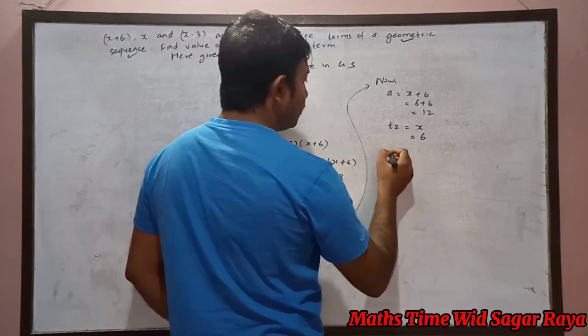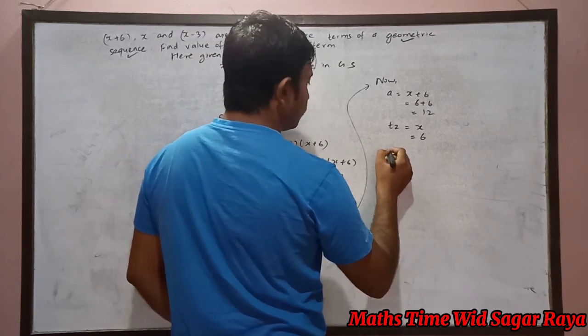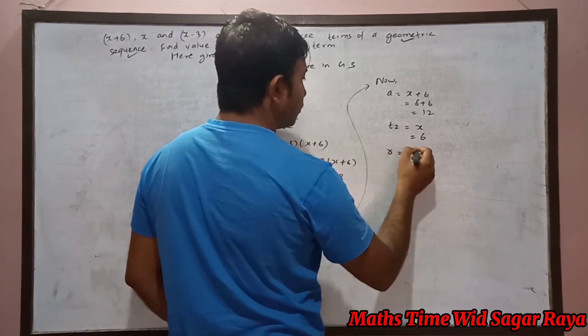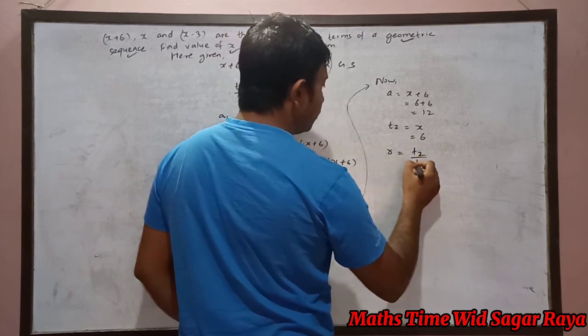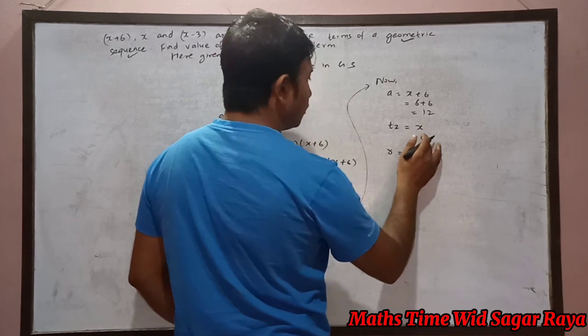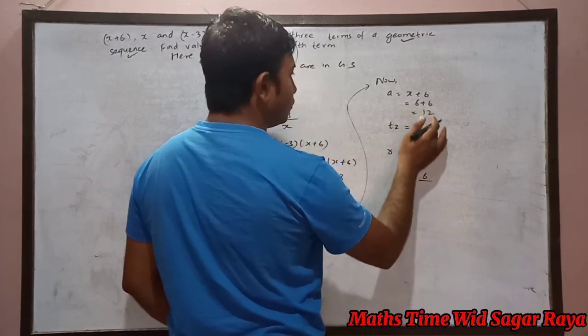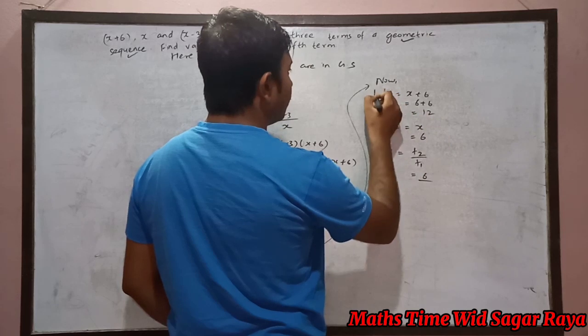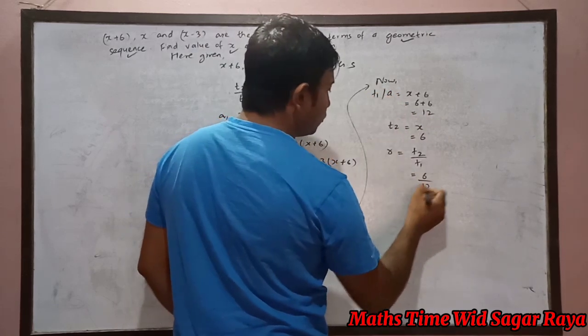Let's find common ratio. Common ratio will be t2 by t1. What is t2? 6. And t1 or a equals 12. So 6 by 12, our common ratio is 1 by 2.